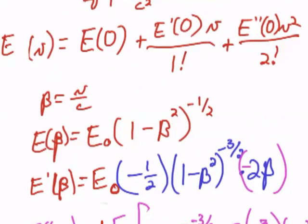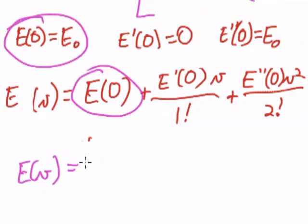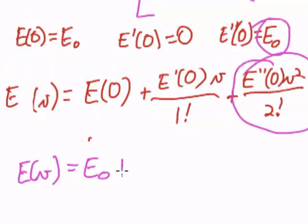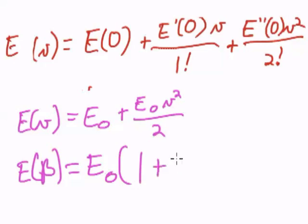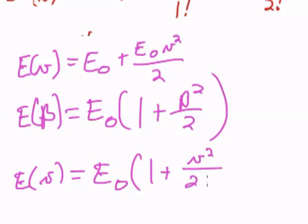So, when we do the Maclaurin expansion, which I will drag down, we find that E of V equals E sub 0 plus 0 plus E sub 0 V squared over 2. Oh, except I've been using the variable beta, so this should be E of beta equals E sub 0 times 1 plus beta squared over 2, which is the same thing as E of beta is V over C, so if I plug a V in there and make it a function of V, it would be 1 plus V squared over 2C squared.